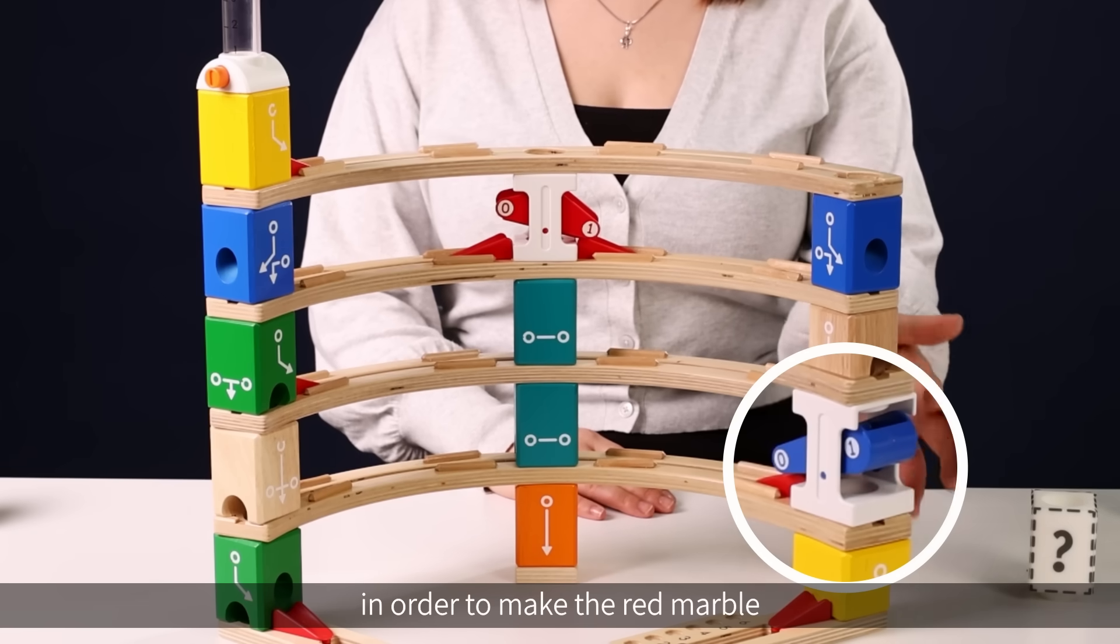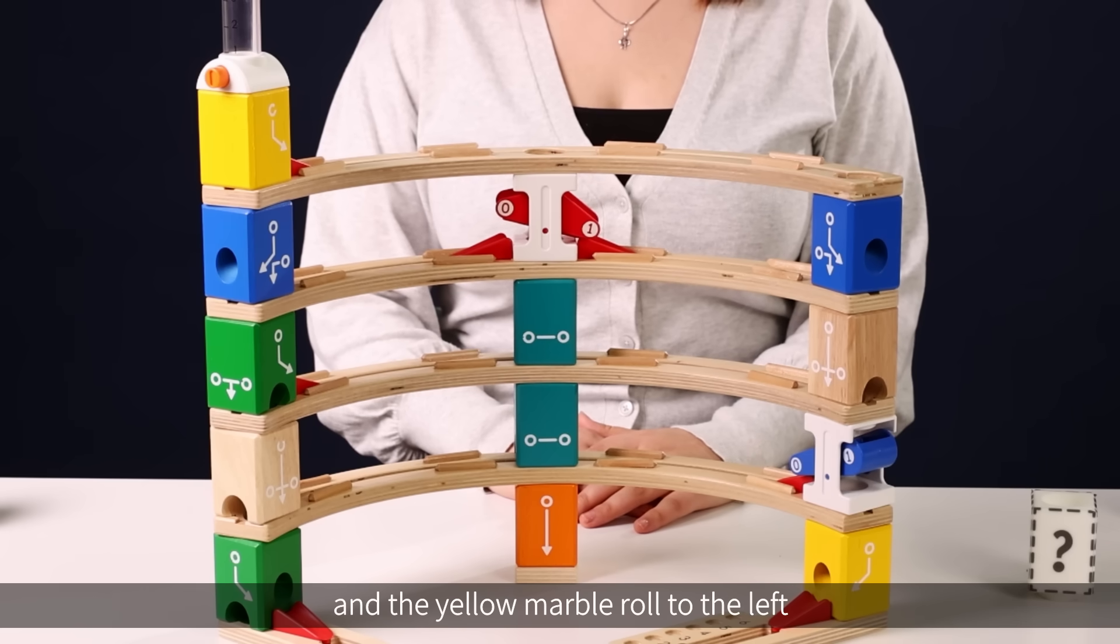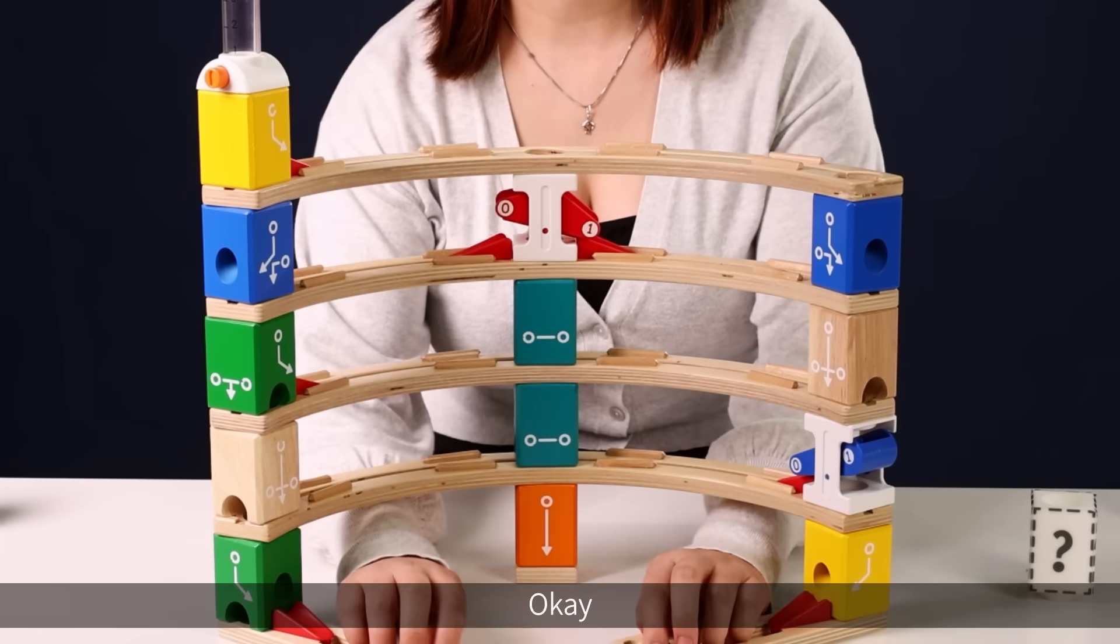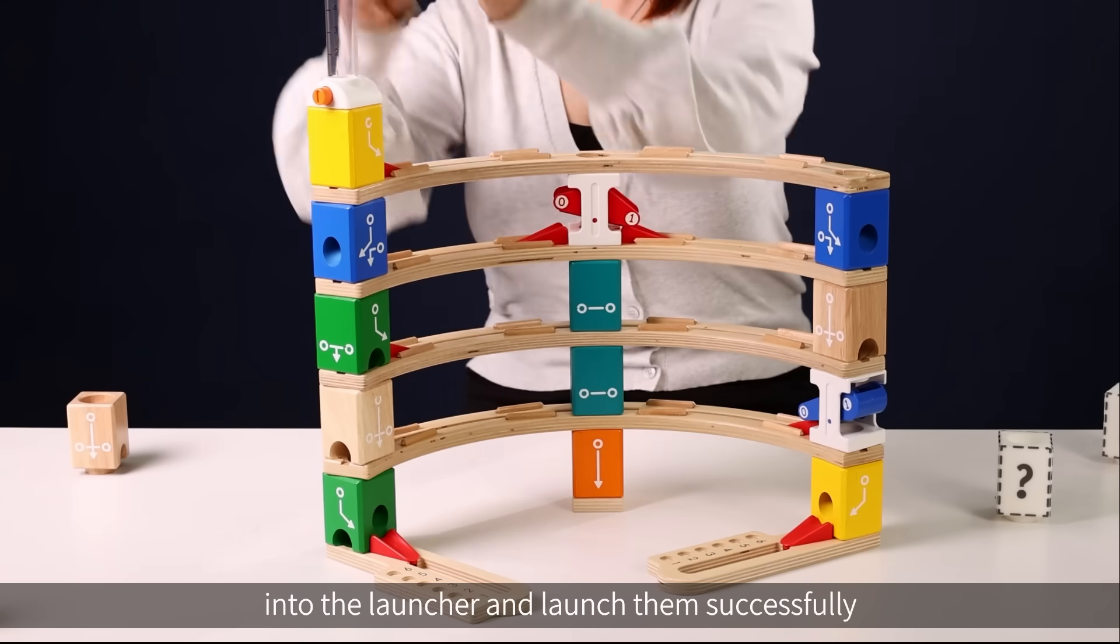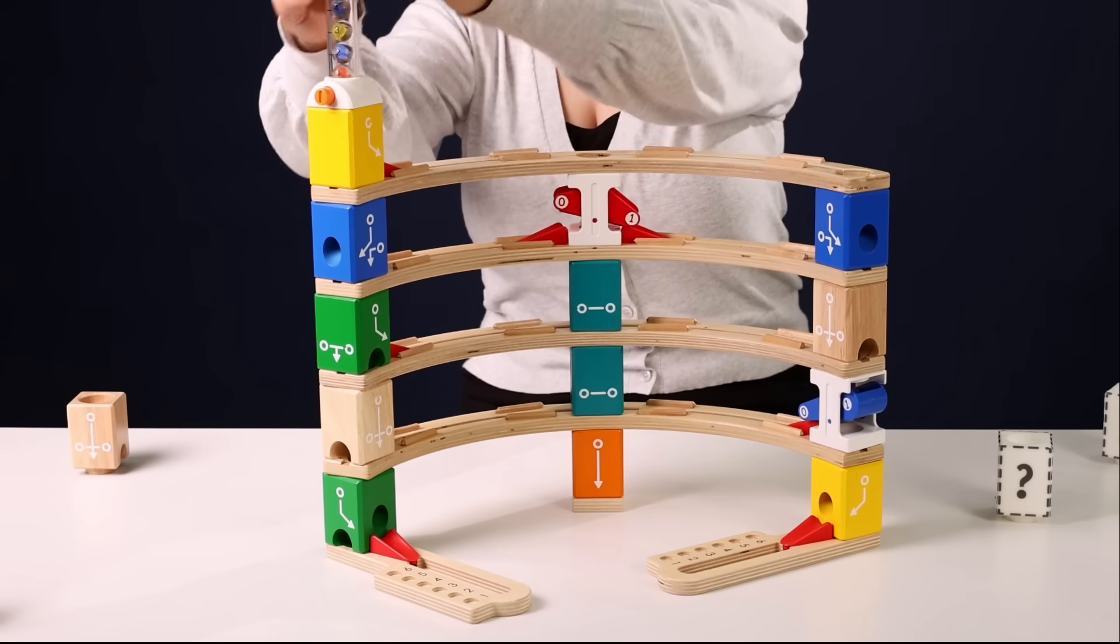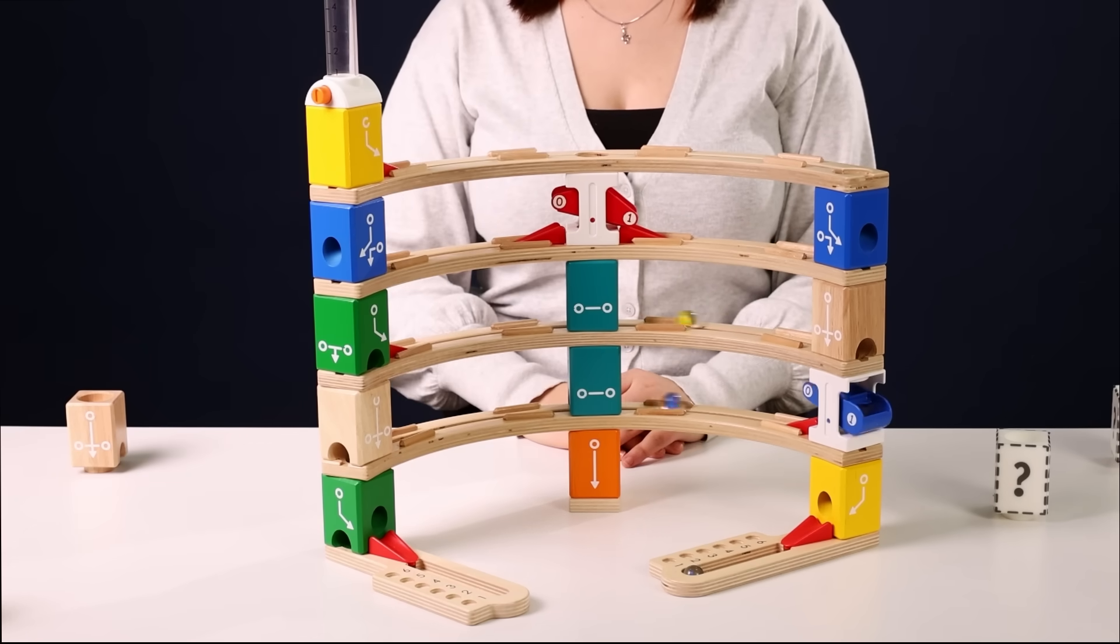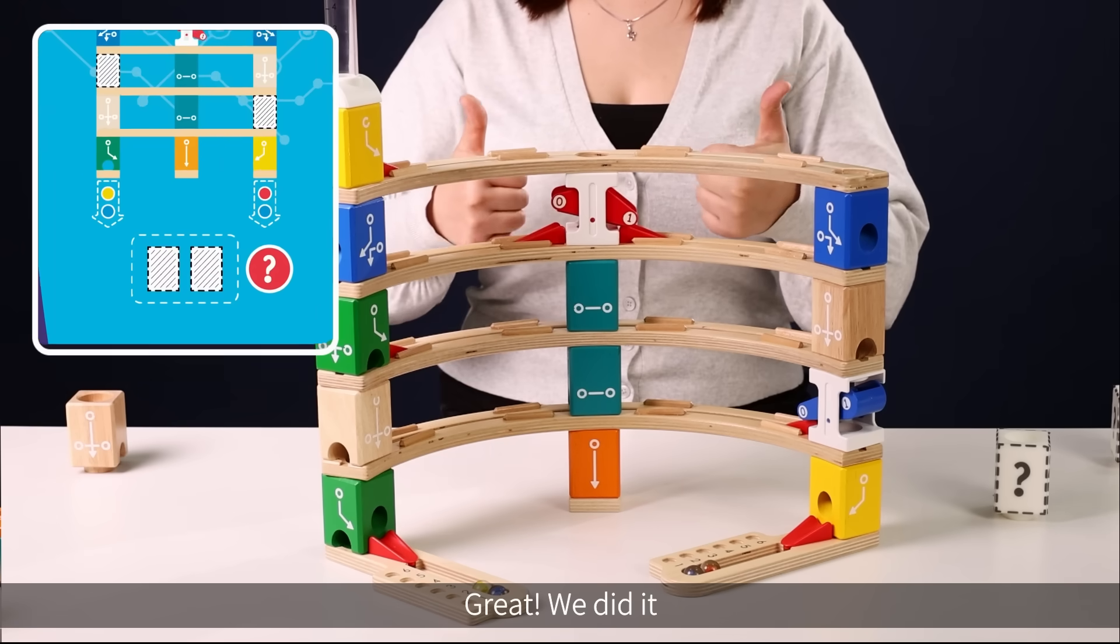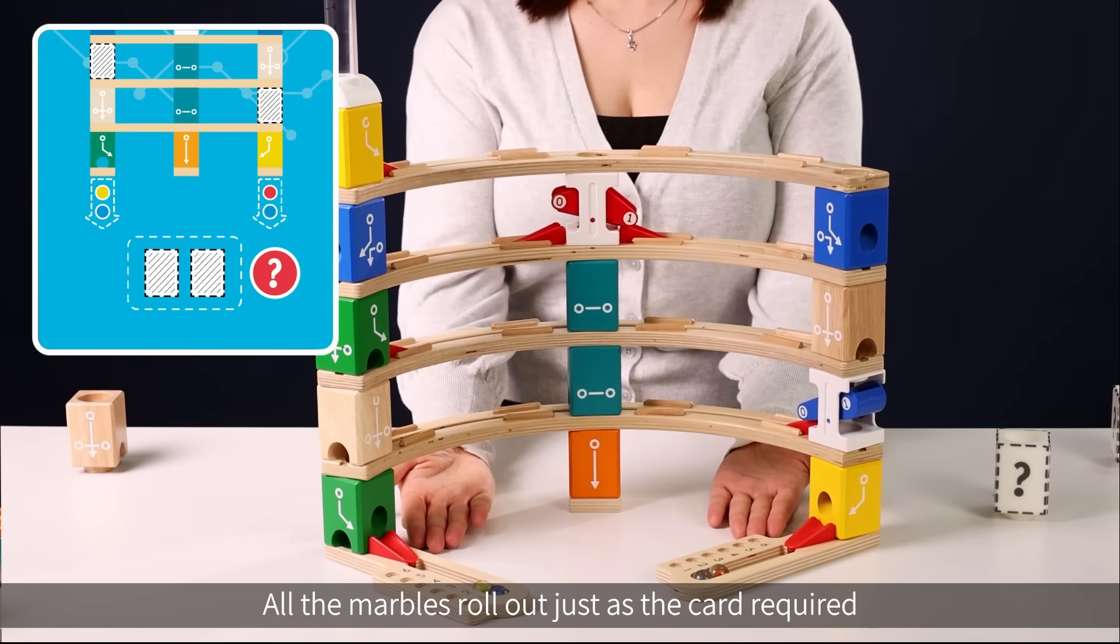We need to put one on the top and zero at the bottom in order to make the red marble roll straight down the yellow block and the yellow marble roll to the left and out of the green block. Okay, so let's put the marbles back into the launcher and launch them. Successfully! Great, we did it! This seems to work. All the marbles roll out just as the card required.